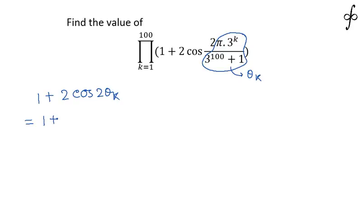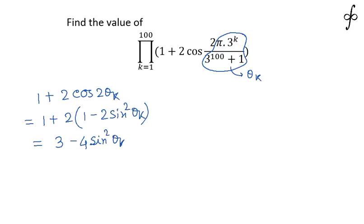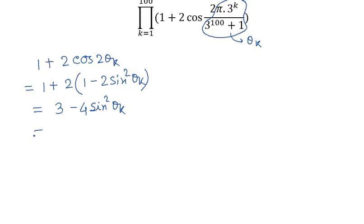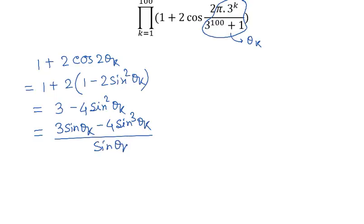We can analyze the term 1 plus 2cos(2θ_k) as 1 minus 2sin²(θ_k) according to the multiple angle formula, which gives us 3 minus 4sin²(θ_k). Multiplying and dividing by sin(θ_k), this becomes [3sin(θ_k) minus 4sin³(θ_k)] divided by sin(θ_k). In the numerator, we recognize the triple angle formula, giving us sin(3θ_k) / sin(θ_k). This is the compact representation of the term.